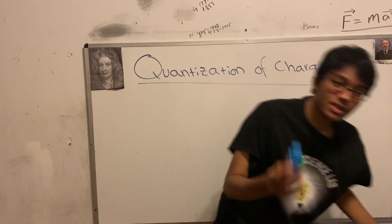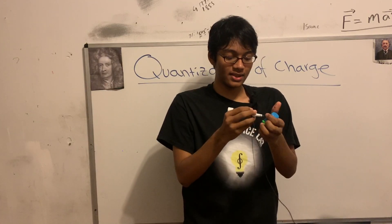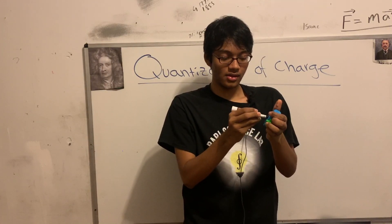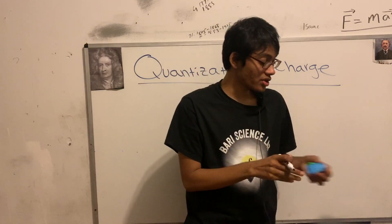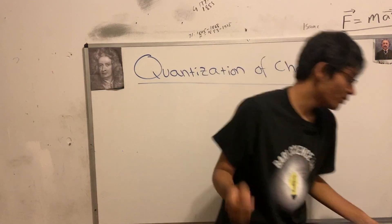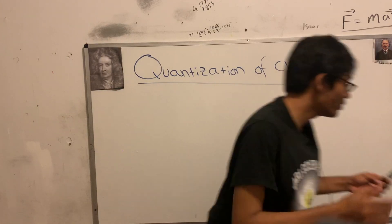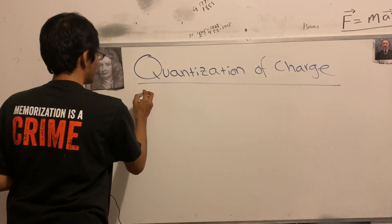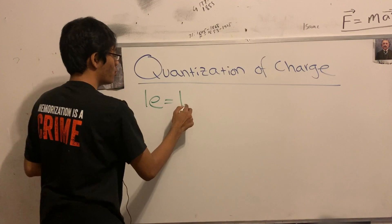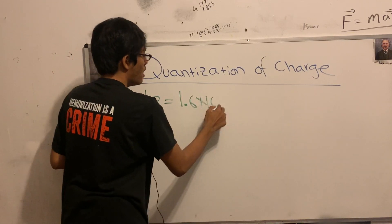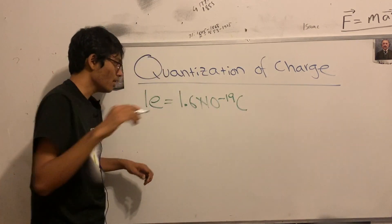What is the charge carried by one of these electrons? The charge on any electron is going to be expressed in coulombs. We can write that down as: the charge carried by one electron is 1.6 times 10 to the negative 19 coulombs.